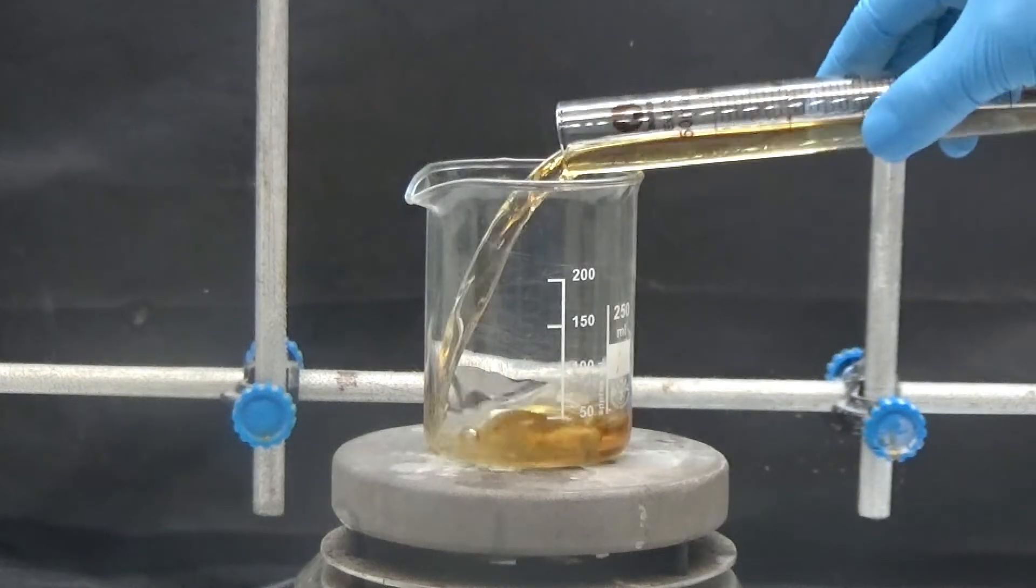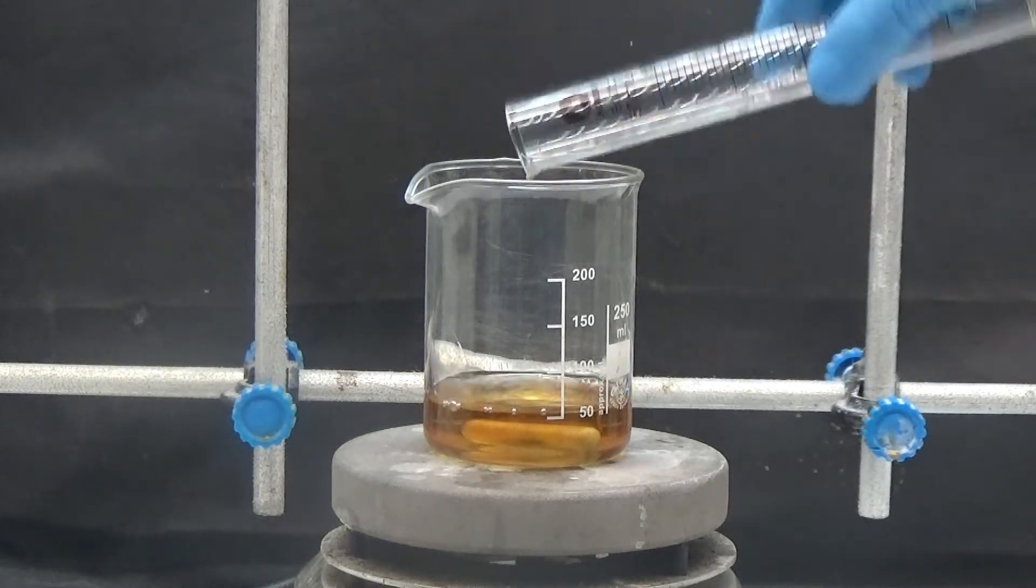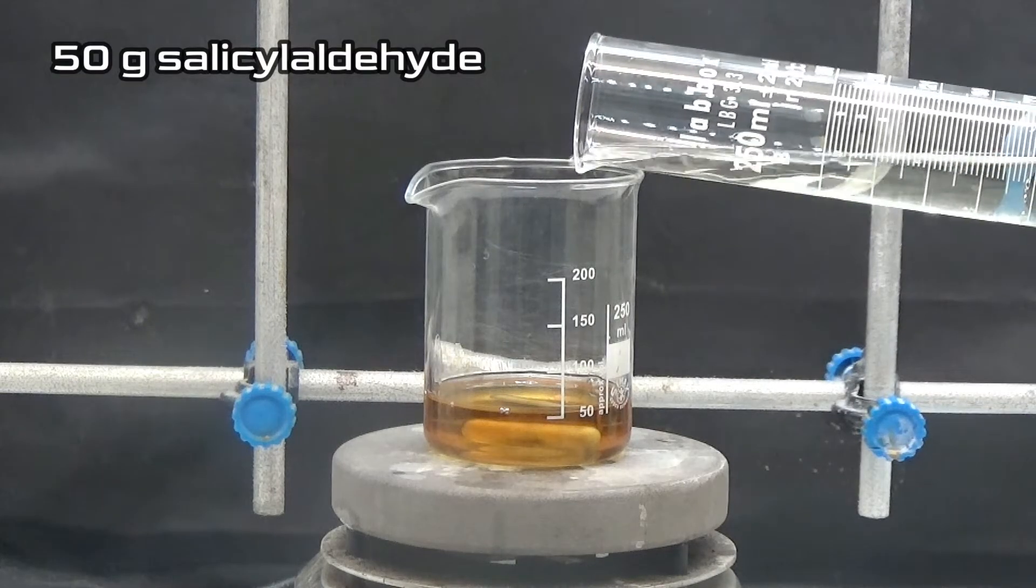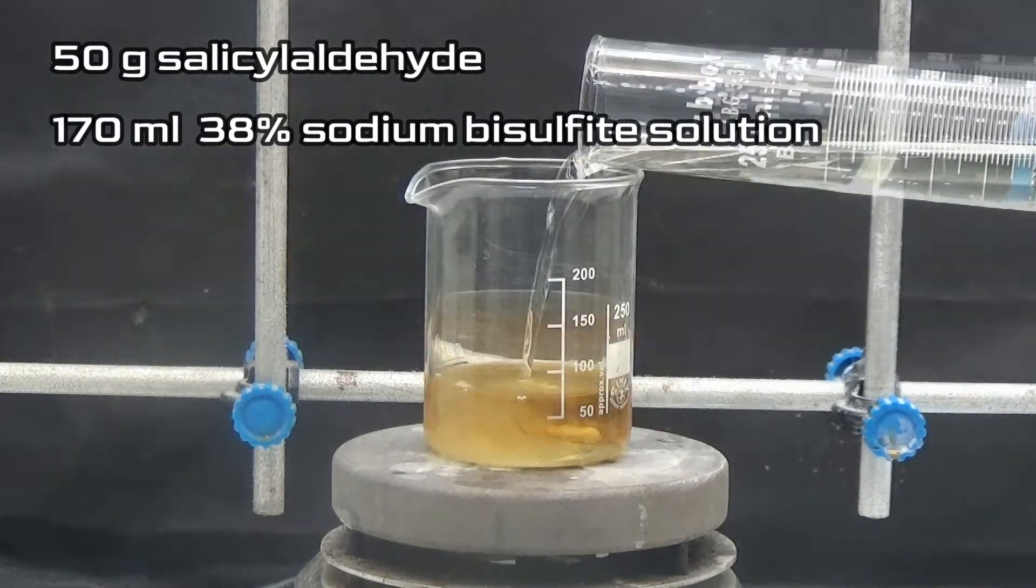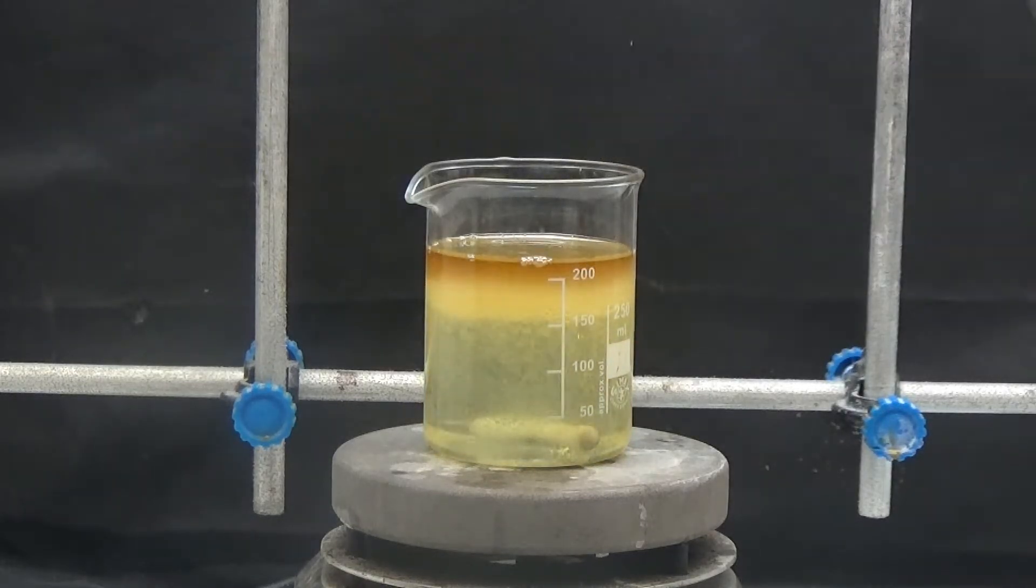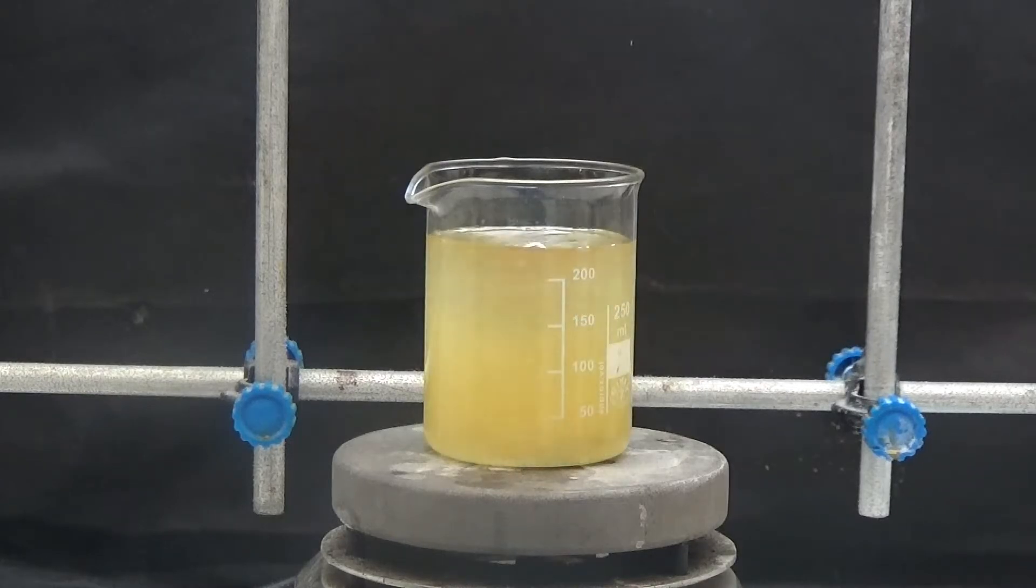The first thing we are going to do is purify the salicylaldehyde using the sodium bisulfite method. We put 50 grams of salicylaldehyde and 170 milliliters of 38% sodium bisulfite solution in a 250 milliliters beaker. Keep stirring vigorously for 40 minutes.